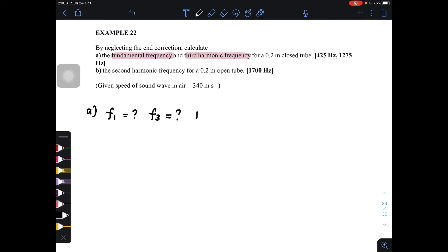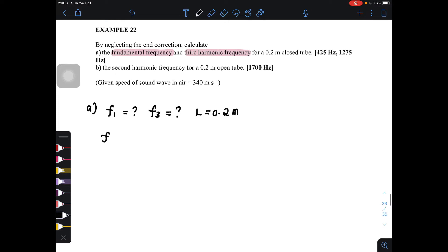And then, given the length of the tube is 0.2 meter. So this one, it's easy to use the general formula where Fn is equal to nV divided by 4L. And then V here is the speed of sound.